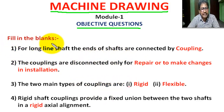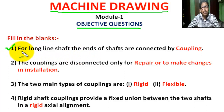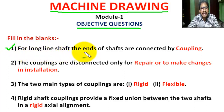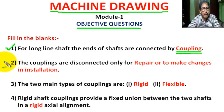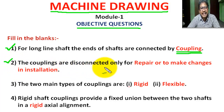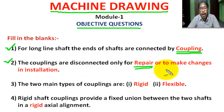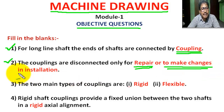Fill in the blanks. Question number 1: For long line shafts, the ends of the shafts are connected by coupling. Question number 2: The couplings are disconnected only for repair or to take changes in installation.